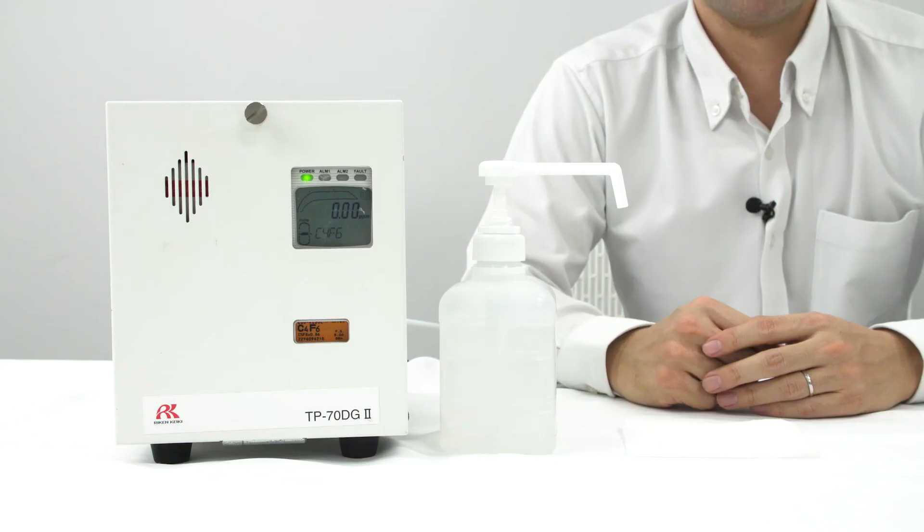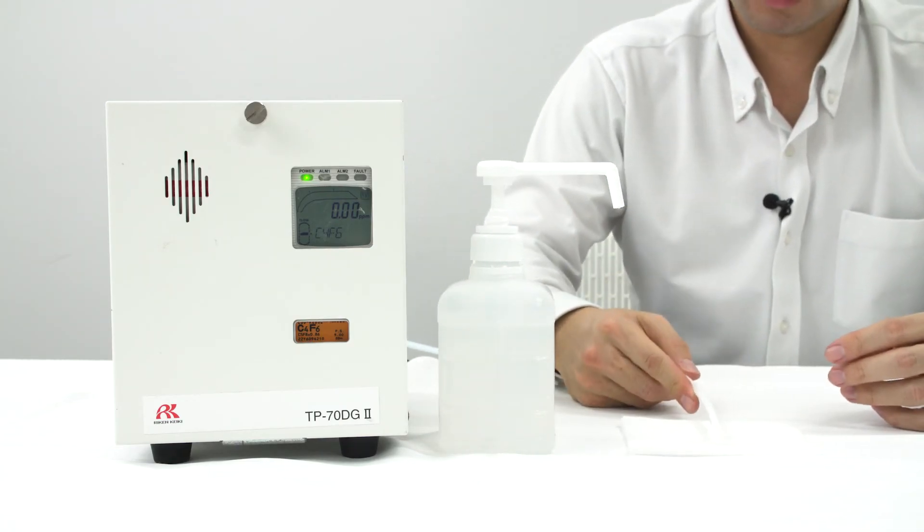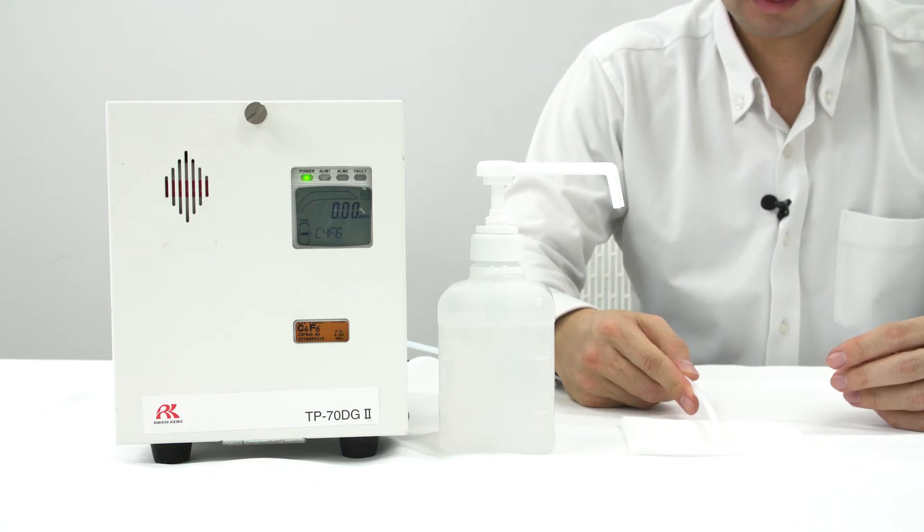This time, we are going to show you how much the TP70DG2 can suppress the interference with a cleaning agent. Here, we have prepared an alcoholic cleaning agent that is used on site in practice. We vaporize the cleaning agent and let the TP70DG2 aspirate it.